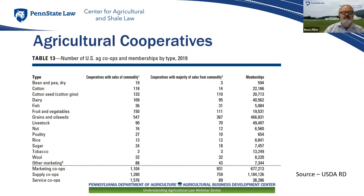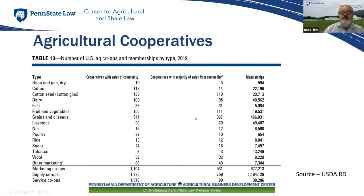The next few slides show statistics painting a picture of the role cooperatives play in the ag sector — the number of cooperatives broken down by commodity and the number of members. Grains and oilseeds appear to be the largest sector in terms of cooperatives and members. Dairy, cottonseed, and fruits and vegetables are also high.